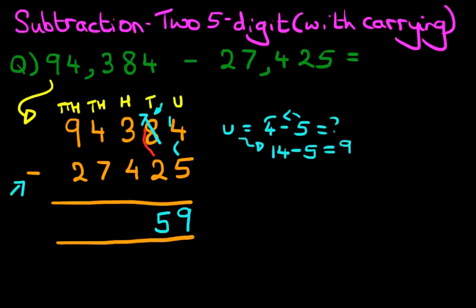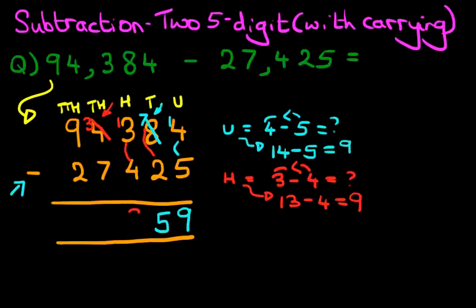Now we're going to do the hundreds column. What is three minus four? Let's write this down. Three minus four - well, we know the number three is less than four, so we cannot do this. The same principle applies. The number to its left is four. We're going to take one from here. So let's cross out four. Four minus one is three. The one we have taken from here, we're going to add it there. So the hundreds column has now become 13 minus four. The answer is nine.